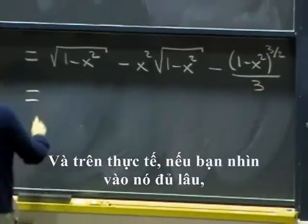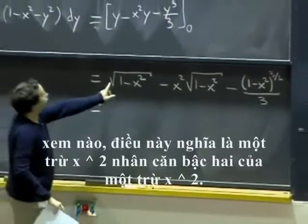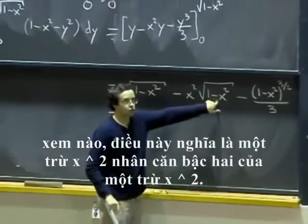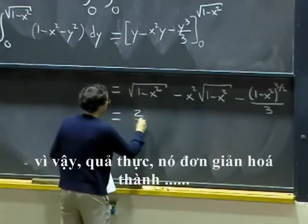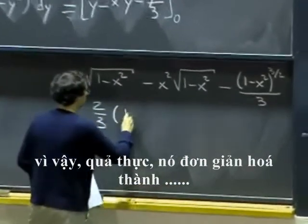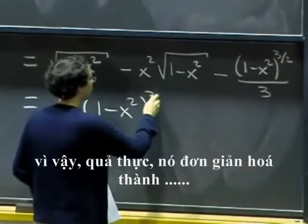And, actually, if you look at it for long enough, see, this is one minus x squared times square root of one minus x squared. So, actually, that's also, in fact, that simplifies to two-thirds of one minus x squared to the three halves.